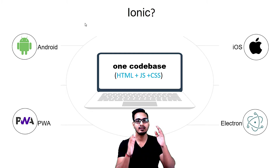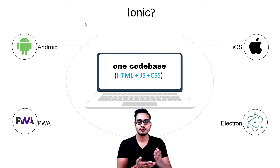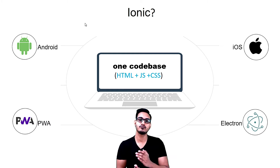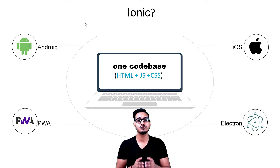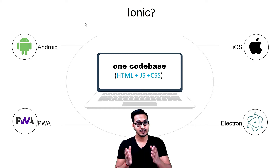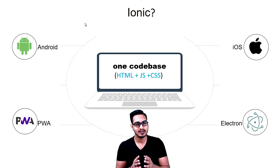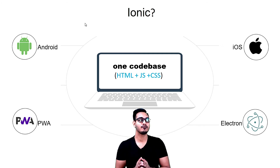Building applications on different platforms takes a lot of time. For Android you need to learn Android Studio, Java or Kotlin. For iOS you need to learn Swift. For PWA and Electron there are other approaches. This is very time-consuming and requires a lot of effort, and that is why Ionic comes in handy — it provides one code base for multiple types of platforms.